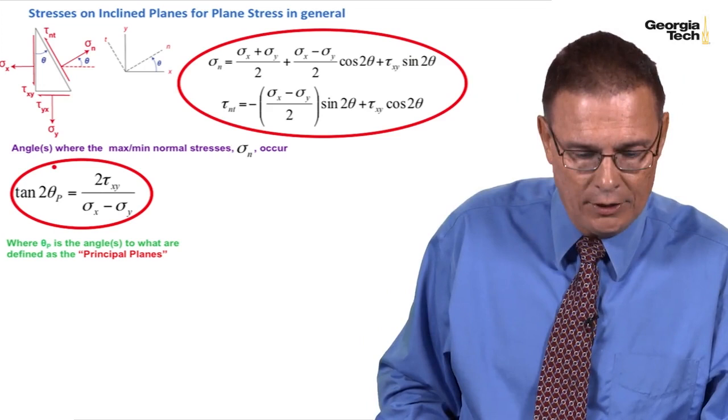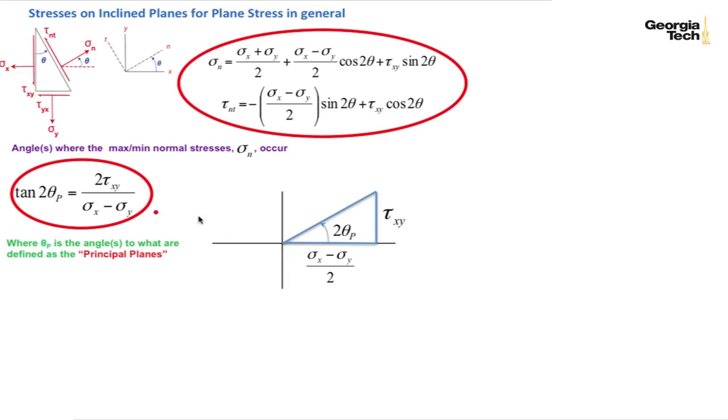And so let's look at this graphically. Since it's a tangent, opposite would be tau xy over adjacent which would be sigma sub x minus sigma y over 2. Knowing those two perpendicular sides by the Pythagorean theorem we can find the hypotenuse.